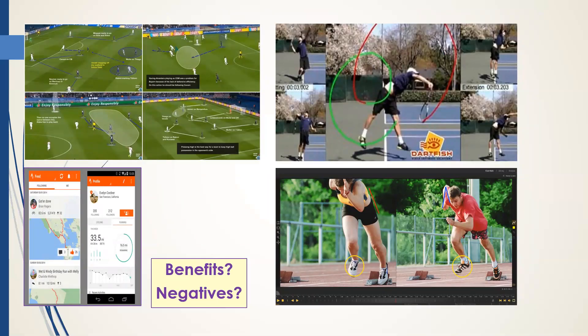We're now looking at different types of technology — this is more to do with the analysis of performance. You've got different types of programs and computer software. Some that everyday people can use, like Strava and Nike running apps that people can have on their phones, linked into watches or little gadgets you can put in your shoes to track the distance you're running, the speed, and the intensity of your runs. There's so much technology involved in that. At a more elite level, you've got programs such as Dartfish.